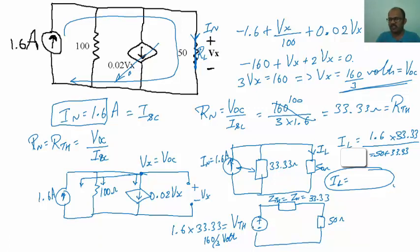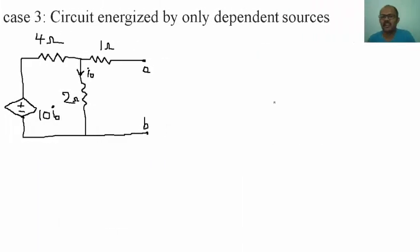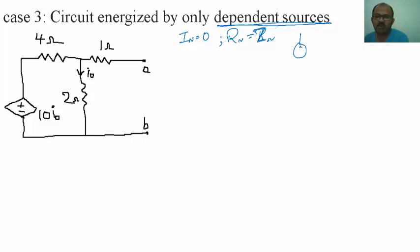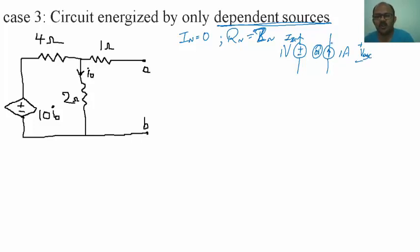Case 3: the circuit consists of only dependent sources. At this condition, Norton's current equals zero because there is no active independent element — so there is no need to find Norton's current. You only need to find Norton's impedance ZN. To find it, inject a test source (either a voltage source or a current source). If using a 1 volt test voltage, calculate the resulting short circuit current; if injecting 1 ampere, find the voltage across it.